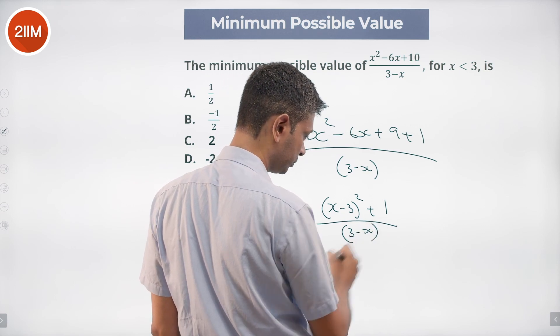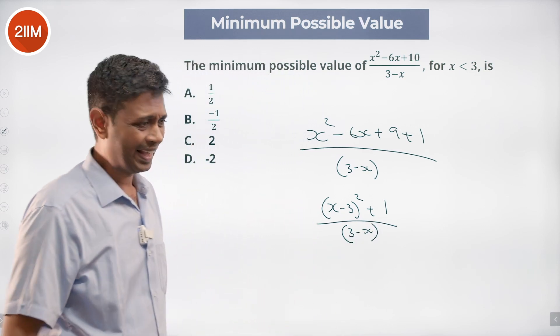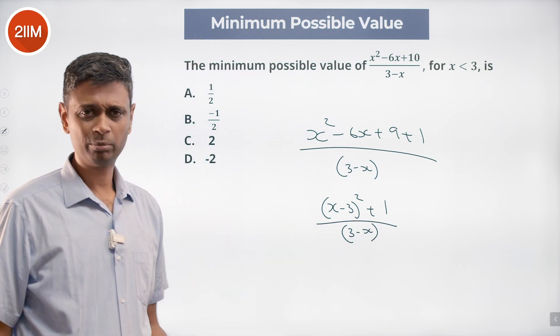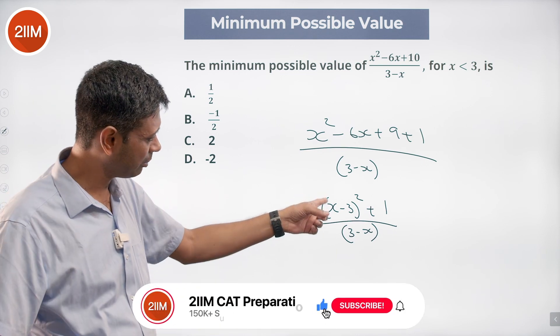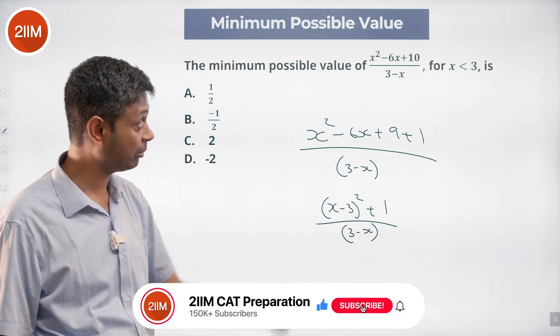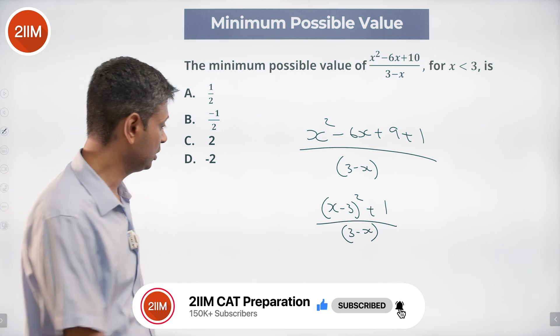3 - x. Now (x - 3)² and (3 - x)² are the same, so this is (3 - x)² + 1 divided by (3 - x). It's very clear that x is less